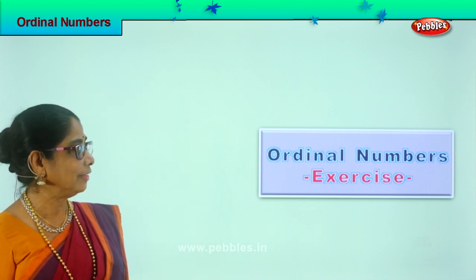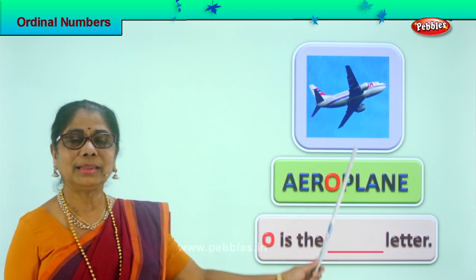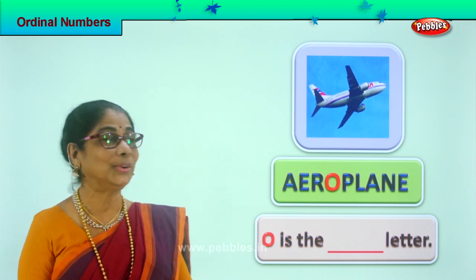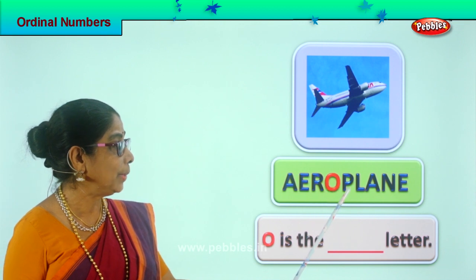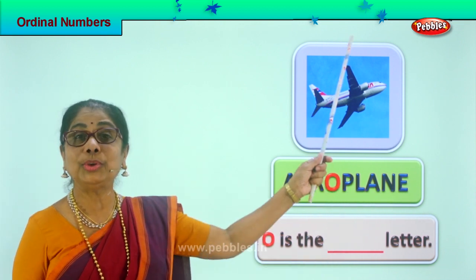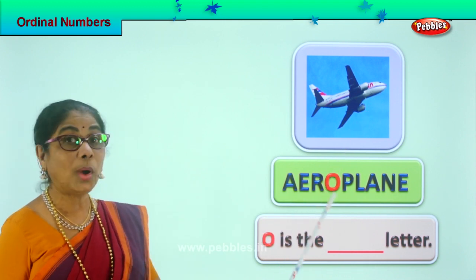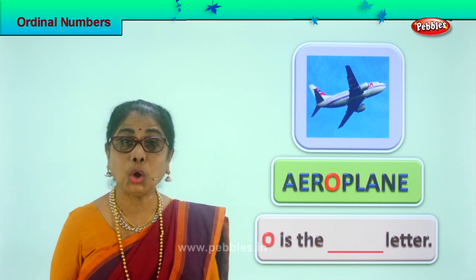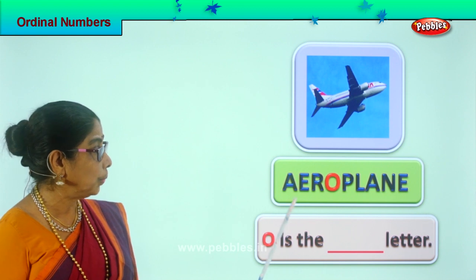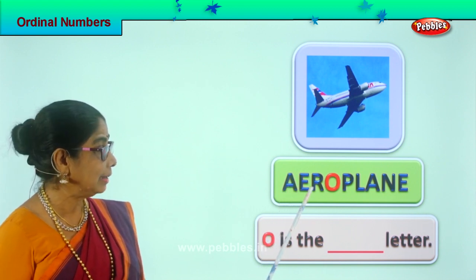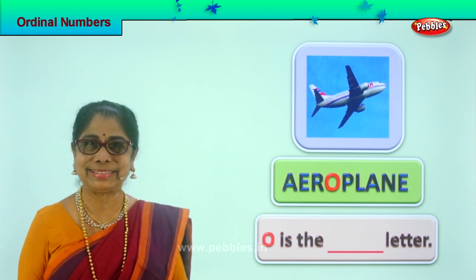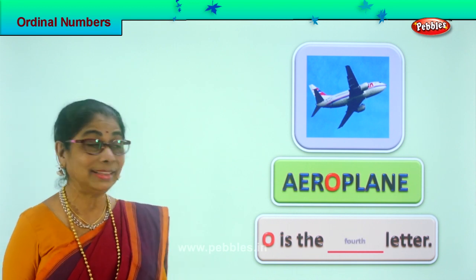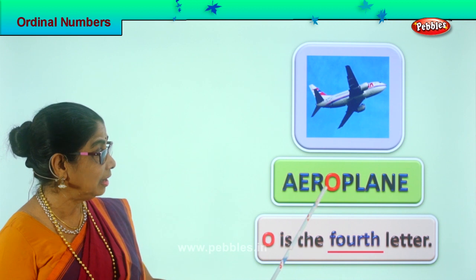Look at our first exercise. You have a picture here — what picture is that? Airplane! Very good. Spell airplane: A-E-R-O-P-L-A-N-E. Now you have the airplane here, and in the airplane one letter is colored. We are going to find out the ordinal position of letter O. First, second, third, fourth — O is the fourth letter.